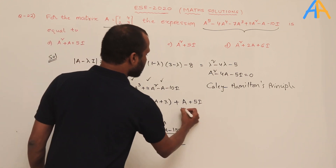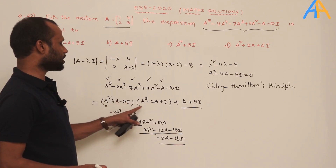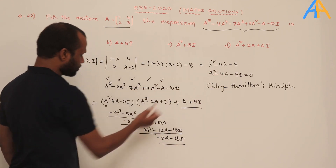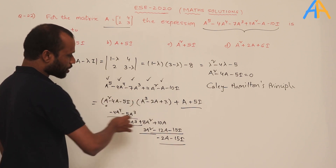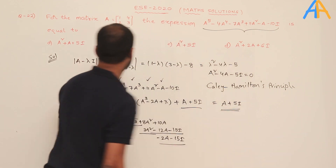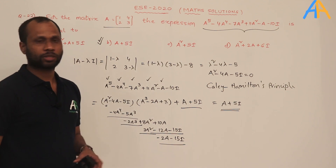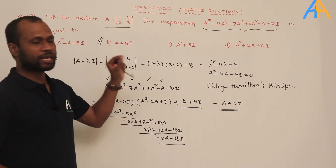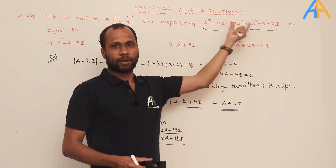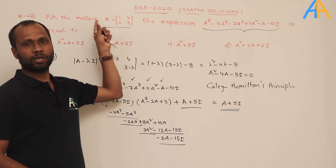The given expression equals (A² − 4A − 5I)(A³ − 2A + 3) + (A + 5I). Since A² − 4A − 5I = 0 by Cayley-Hamilton, the first part vanishes, leaving A + 5I. The answer is B. The key takeaway: whenever you see a large matrix polynomial, apply Cayley-Hamilton theorem and the characteristic equation.